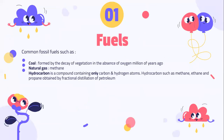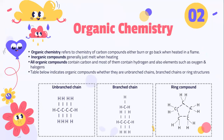Let's look into fuels. Common fossil fuels such as coal is formed by the decay of vegetation in the absence of oxygen millions of years ago. Natural gas, for example methane, is a hydrocarbon — a compound containing only carbon and hydrogen atoms. Hydrocarbons such as methane, ethane, and propane are obtained by fractional distillation of petroleum.